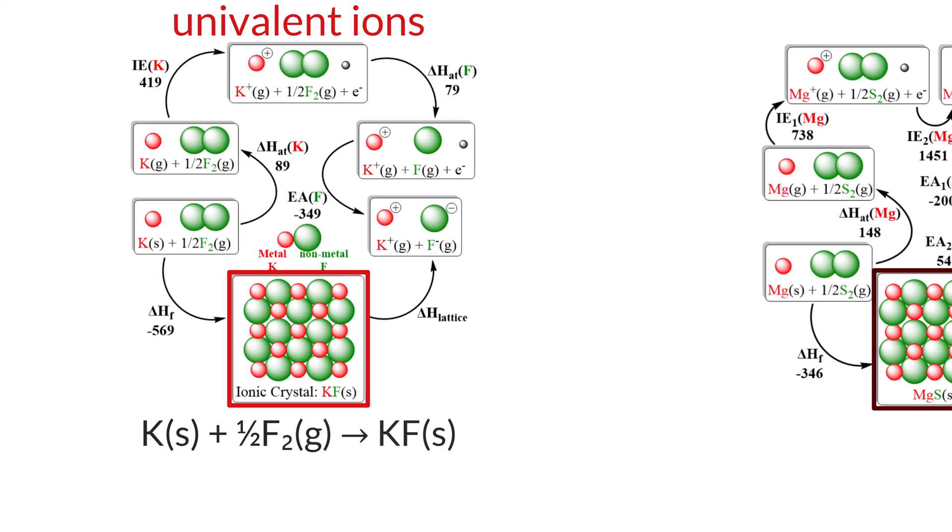The given data includes the enthalpy of atomization of potassium at 89 kJ per mole, ionization energy of potassium at 419 kJ per mole, electron affinity of fluorine at negative 349 kJ per mole, and the enthalpy of formation of KF at negative 569 kJ per mole. To calculate the lattice energy for potassium fluoride using the Born-Haber cycle, first list out your known variables.